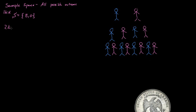What about two kids? The sample space of two kids — you could have a boy first and then a boy again, a boy first and then a girl, a girl first then a boy, or a girl and a girl. So the sample space of that is these four outcomes.